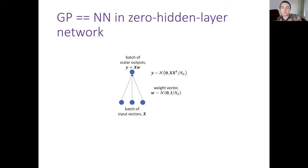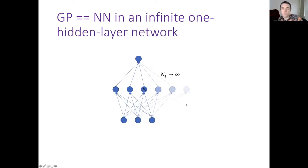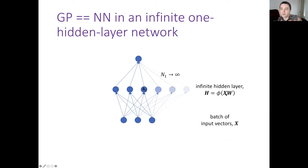This defines our Gaussian process, and an important consequence is that to make predictions we don't need the full batch of input vectors x — we only need the kernel, which is the training-example-by-training-example matrix XX^T. For the one-hidden-layer case with infinite width: inputs x go through a weight matrix and pointwise nonlinearity (like ReLU) to produce hidden activations h, and then a single scalar output is obtained by multiplying h by a weight vector w.